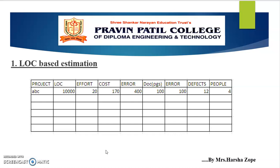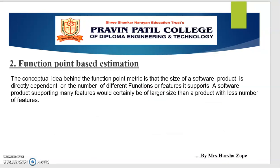The next is Function Point-based estimation. The oriented model is based on the functionality of the delivered application. These are generally independent of the programming language used. This method was developed in 1979. It uses function points, which are derived using countable measures of the software requirement domain and an assessment of the software complexity.